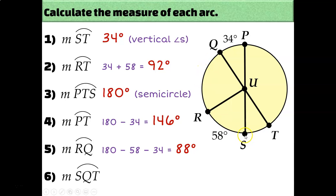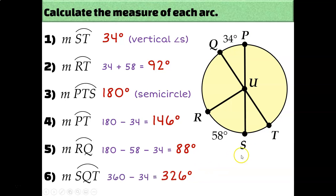To find arc SQT — that's basically the entire circle except the small 34-degree arc ST. You have two options: take 360 minus 34, or add 58 plus 88 plus 34 plus 146. Either way you arrive at the same answer: 326 degrees.